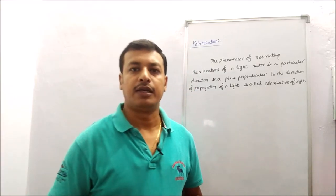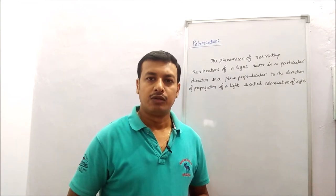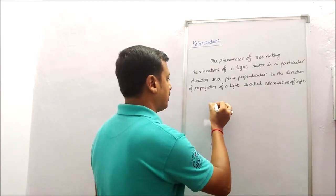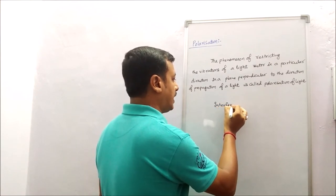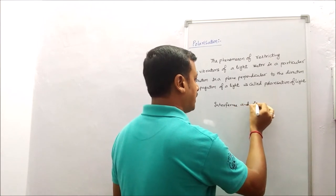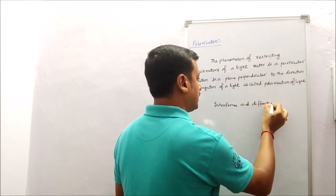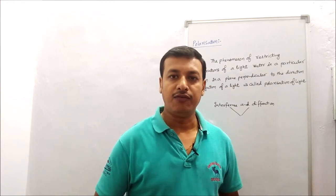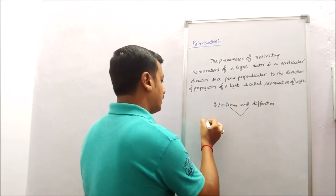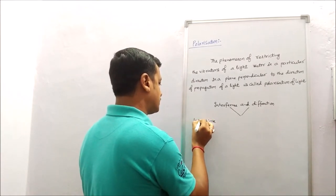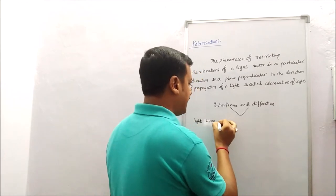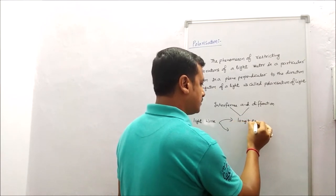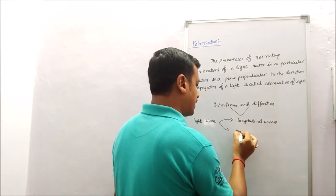Today we are starting the new topic — polarization of light. Before the concept of polarization, two properties that describe the nature of light are interference and diffraction. However, these two properties will not tell us whether light is a longitudinal wave or a transverse wave.